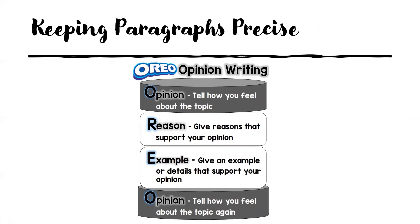Keeping our paragraphs precise is the other thing we can work on. I like to think of opinion writing as an Oreo: O-R-E-O. The first O stands for Opinion — tell how you feel about the topic. The R stands for Reason — give reasons that support your opinion. The E stands for Example — give an example or details that support your opinion, like a professional quote or website quote. And the other O stands for restating how you feel about the topic again.